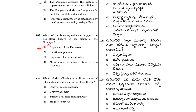Question 133: Which of the following is a direct source of information about the interior of the Earth? Option 3: rock samples from mining areas. If we have the surface rock from the mining area, that is the direct source of information about the interior of the Earth.